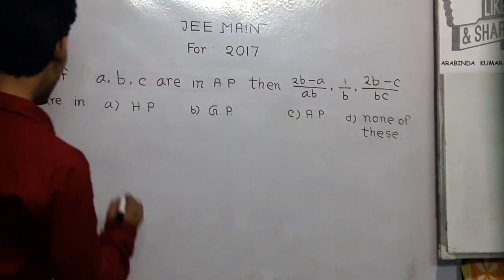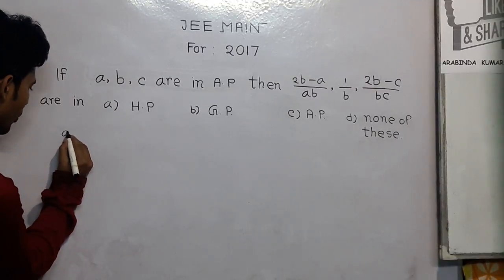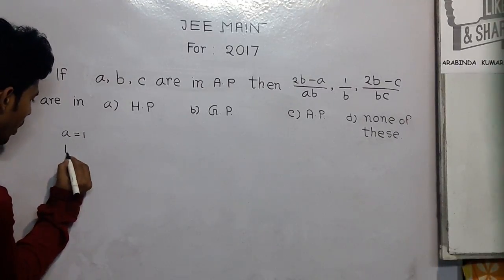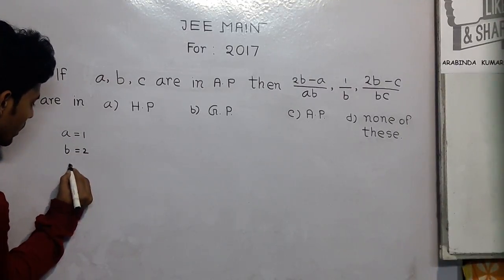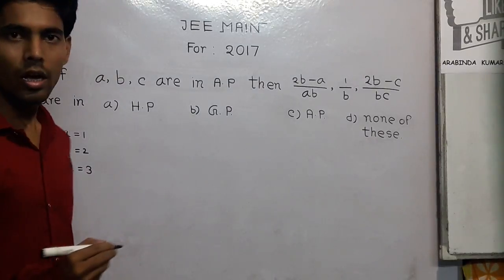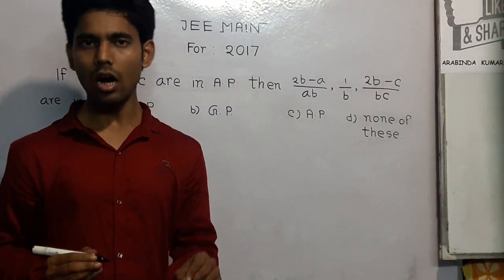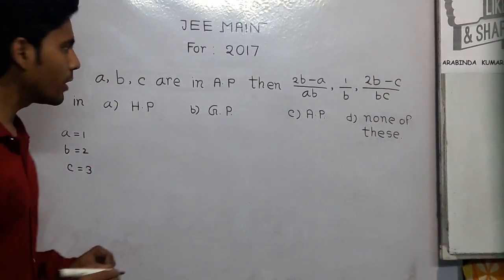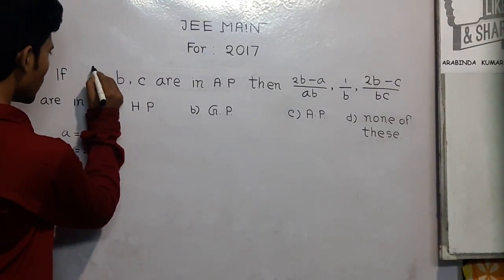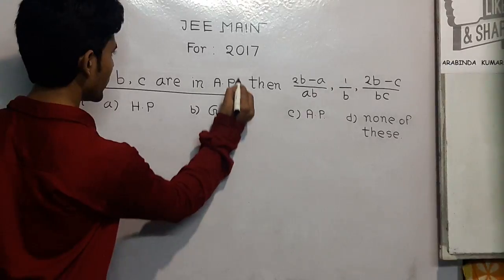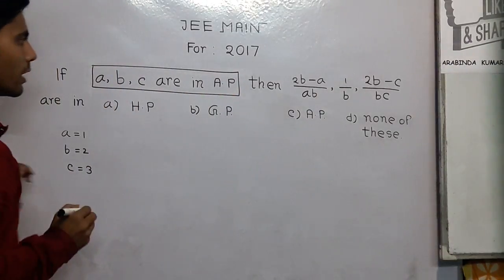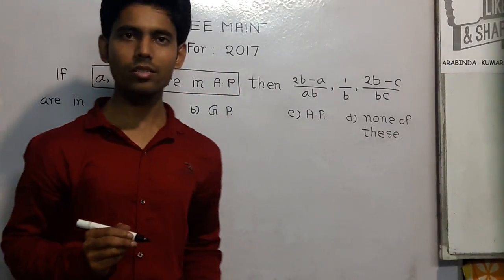To solve this problem, let us consider A equal 1, B equal 2, and C equal 3. Why? Because if A, B, and C are 1, 2, and 3 respectively, then this condition is satisfied. So we can take A equal 1, B equal 2, and C equal 3.